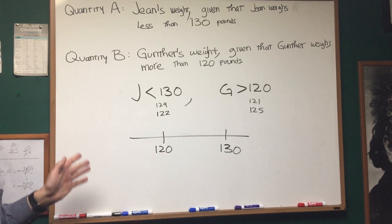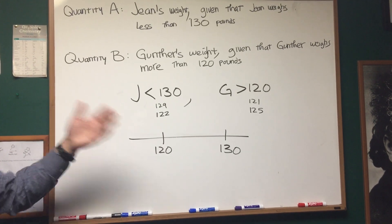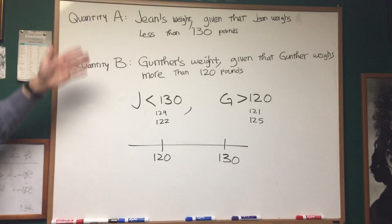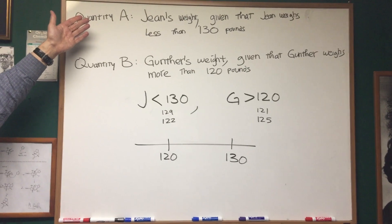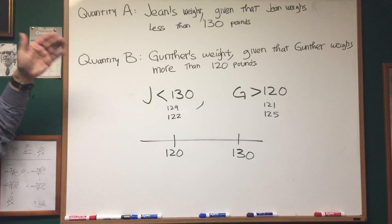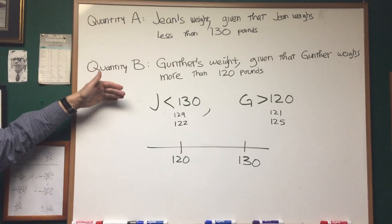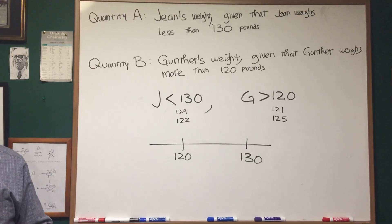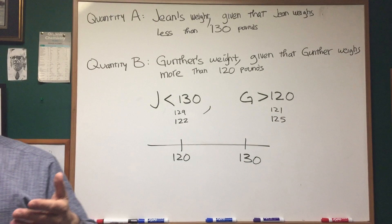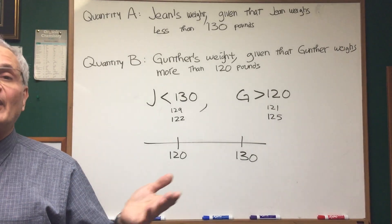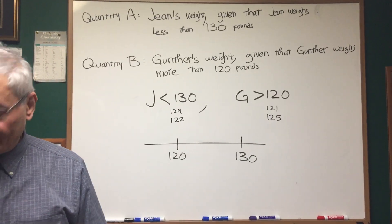So this is indeterminate. We're not given enough information to make a comparison and say whether one quantity is greater than the other. The answer is choice D — the relationship cannot be determined.